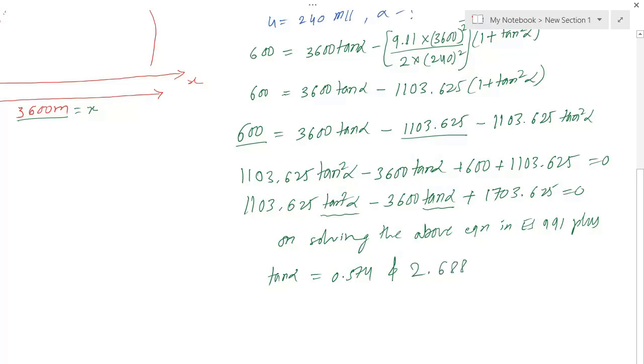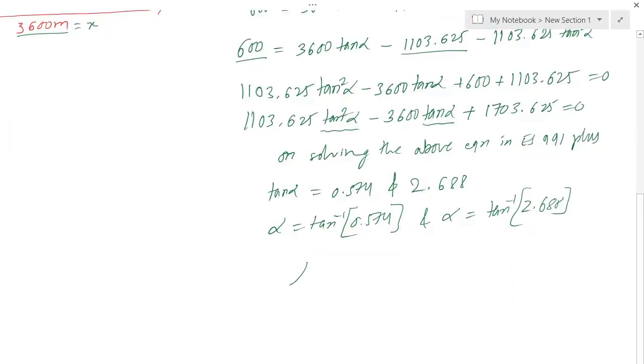Alpha is given by tan inverse of 0.574 and alpha equals tan inverse of 2.688. I get the values as alpha equals 29.86 degrees and 69.869 degrees. These are the values of alpha for the given numerical.